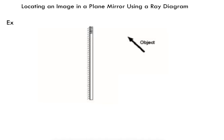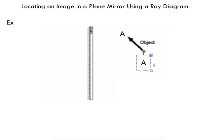The last thing I want to do is show you how to locate an image in a plane mirror using a ray diagram. A plane mirror is just a flat mirror. I've got an object here — you can imagine if I was on this side of the mirror looking at it, I would see the reflection of this object. My goal is to determine where that image is going to be. The object has a tip and a base, labeled as point A and point B. Our goal is to duplicate this object on the other side of the mirror.